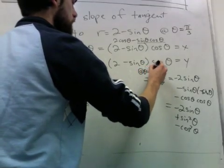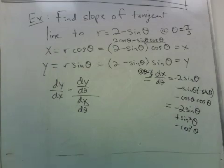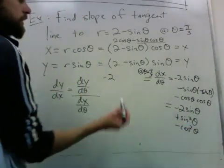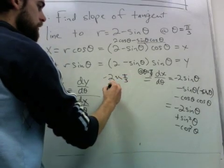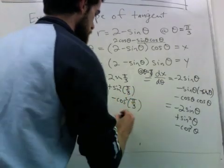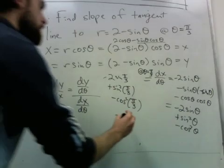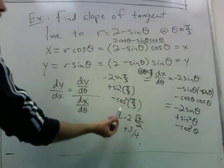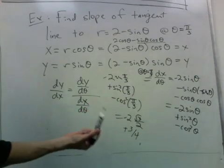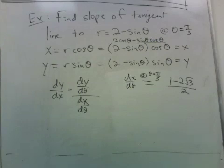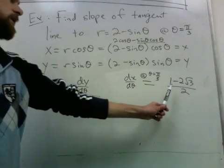At the point we care about, theta equals pi over 3, dx/dθ equals negative 2 sine(π/3) plus sine²(π/3) minus cos²(π/3). Sine of pi over 3 is root 3 over 2, so its square is 3/4. Cosine of pi over 3 is 1/2, so that squared is 1/4. So dx/dθ at theta equals pi over 3 comes out to this value.